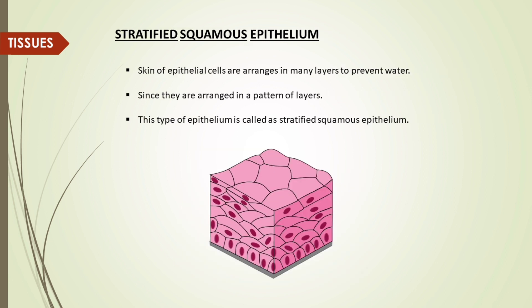Stratified squamous epithelium: the epithelial cells are arranged in many layers to prevent water loss. Since they are arranged in a pattern of layers, this type of epithelium is called stratified squamous epithelium.